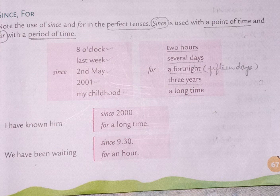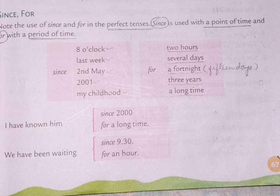Sentence examples: 'I have known him since 2000' — using a point of time — or 'I have known him for a long time' — using a period. Another example: 'We have been waiting since 9:30' — point of time — or 'We have been waiting for an hour' — period of time.